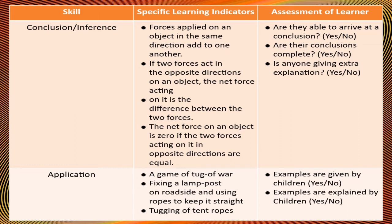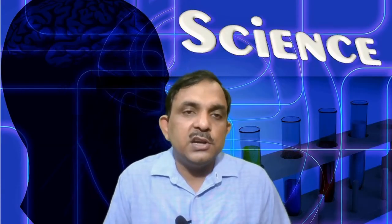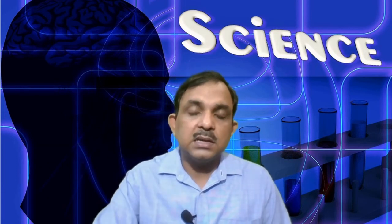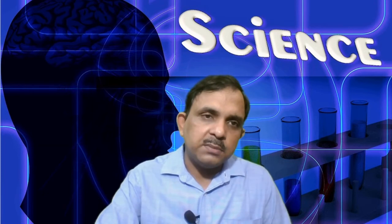Are learners able to show applications of this concept — giving examples like a game of tug of war, fixing a lamppost on a roadside using rope to keep it straight, or a tent rope? Are your students giving such examples from daily life? If yes, they are achieving a particular level. Similarly, in science classes, we generally use diagram-based worksheets, especially in physics and biology, and sometimes in chemistry.